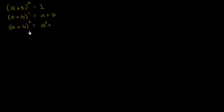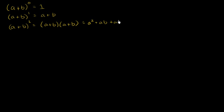a plus b squared is not a squared plus b squared. It is a plus b times a plus b. If you multiply it out: a times a is a squared, plus a times b which is ab, plus b times a which is another ab, plus b times b which is b squared. You have two ab's, so it equals a squared plus 2ab plus b squared.